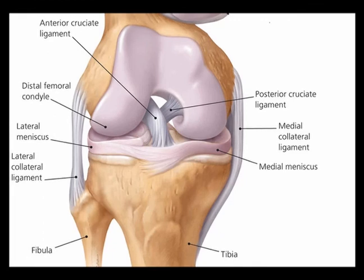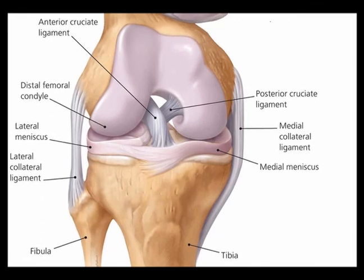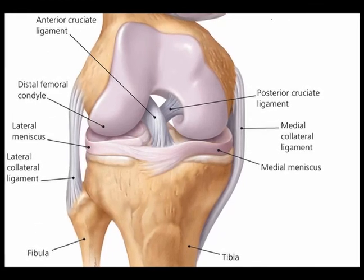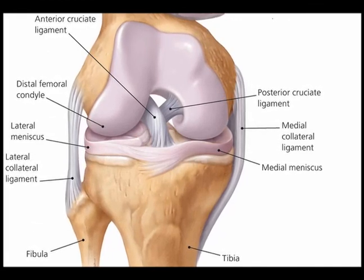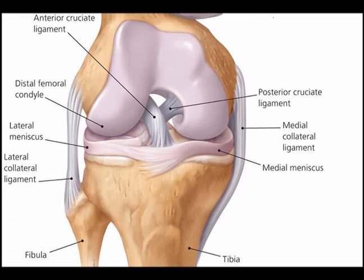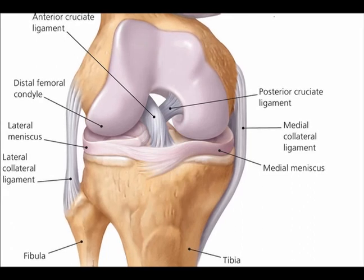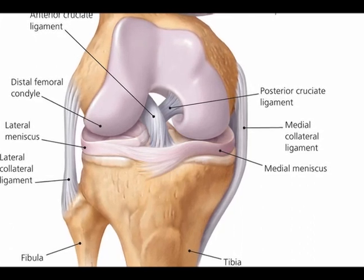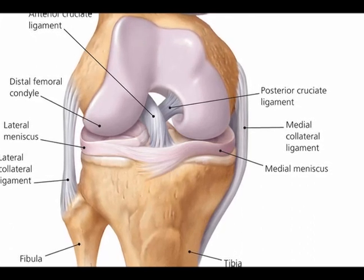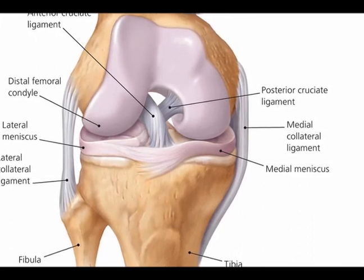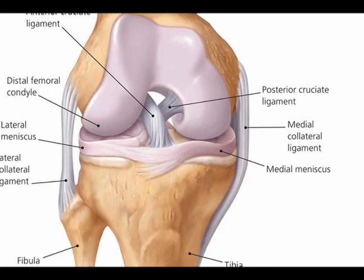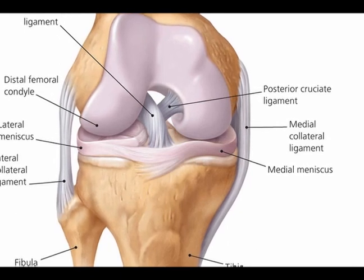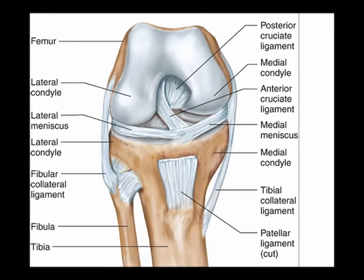It has two bundles: an anterolateral bundle and a posteromedial bundle. The anterolateral bundle stretches when the knee is in flexion, and the posteromedial bundle stretches when the knee is in extension.